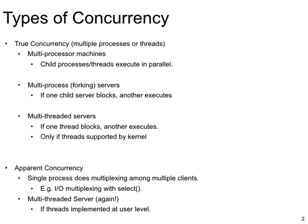You might see apparent concurrency when you use the select system call to handle input output on multiple IO devices. We will learn about the select system call later in this lecture. You also see apparent concurrency when you have user level threads — that is, threads that are not supported by the operating system.